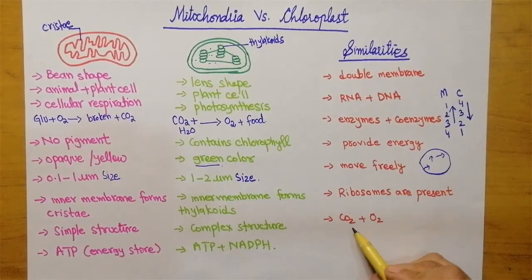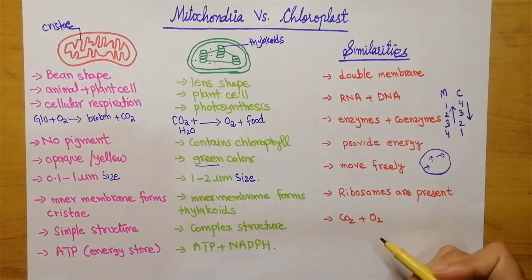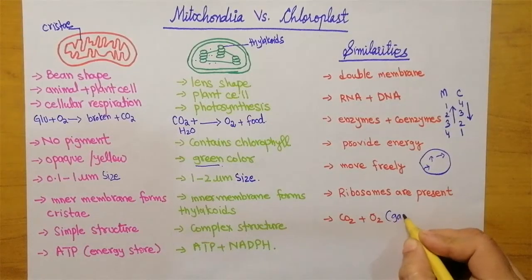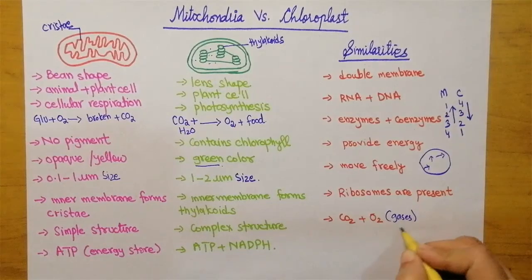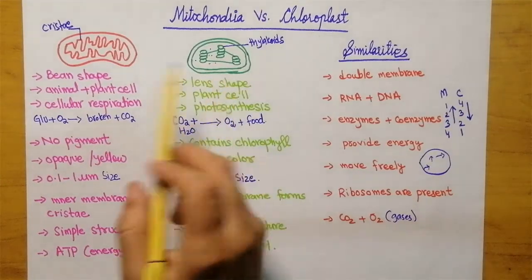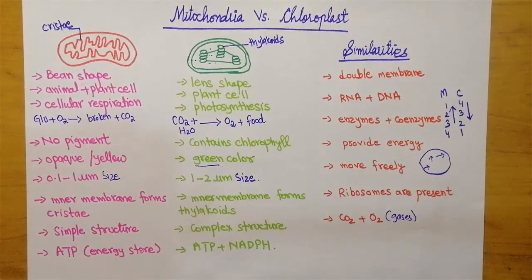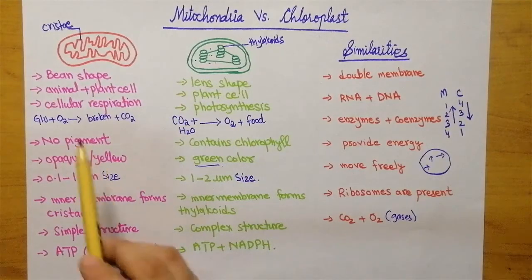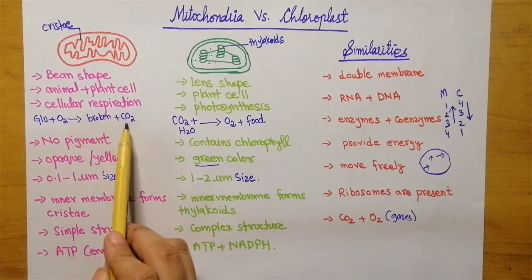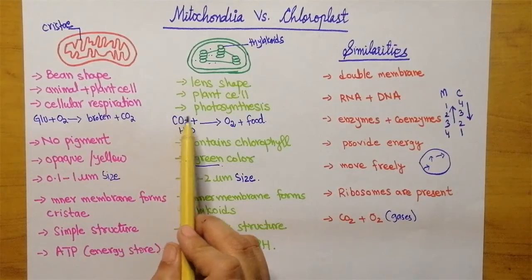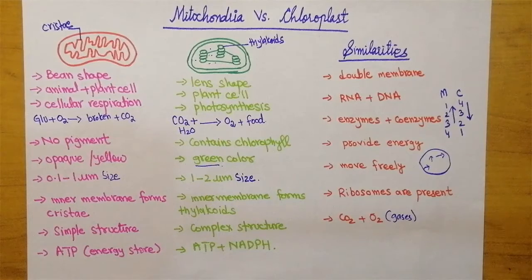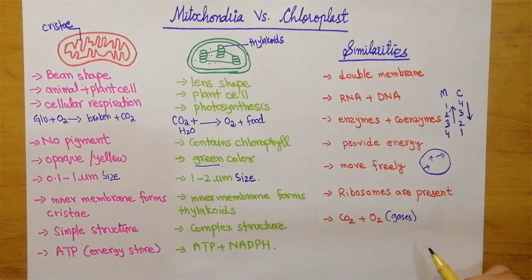Because they have ribosomes present inside, they are producing proteins. Carbon dioxide and oxygen are the two gases associated with both these organelles, although the order is reverse — for mitochondria, oxygen comes first and carbon dioxide is the waste product, while for chloroplast, carbon dioxide comes first and oxygen is released. However, both are associated with carbon dioxide and oxygen.